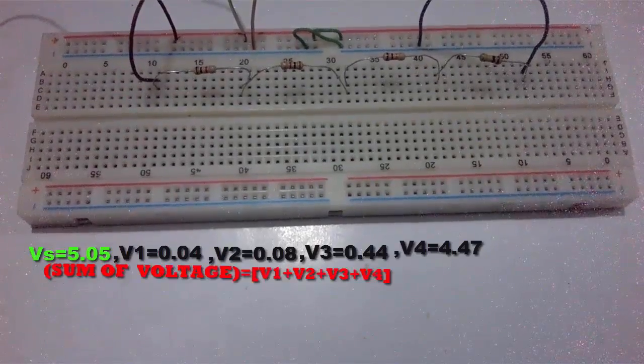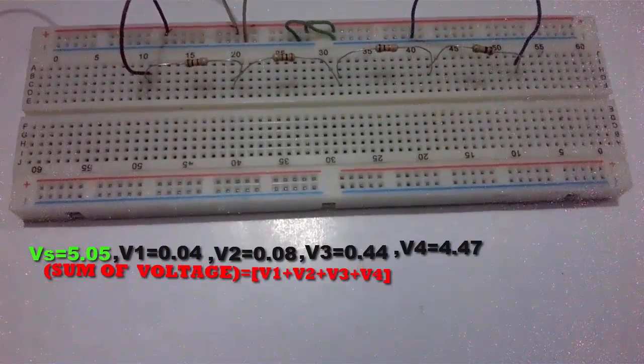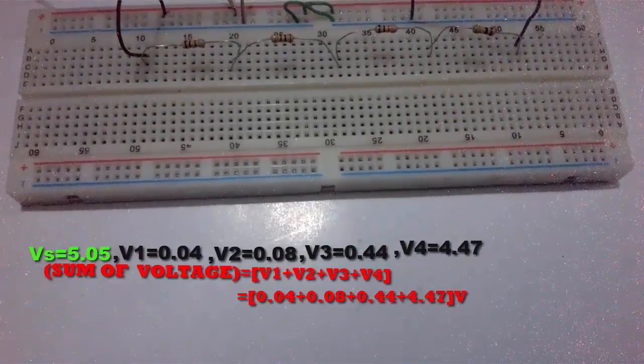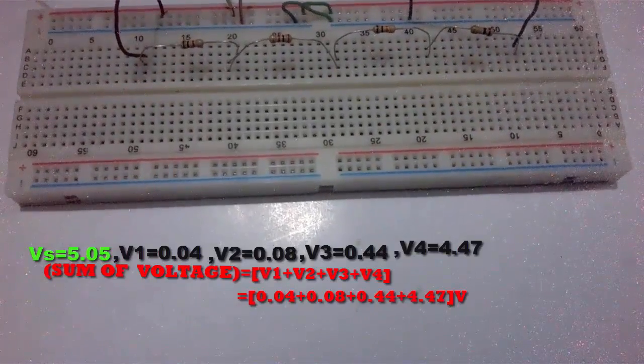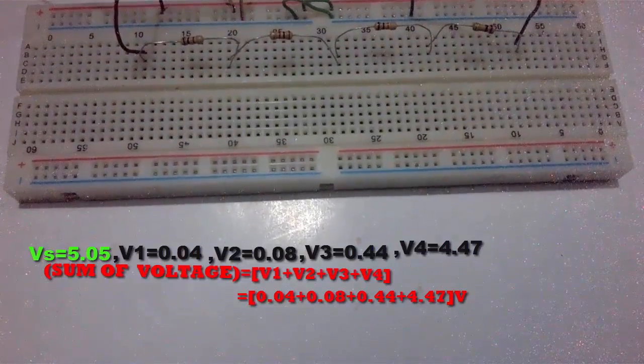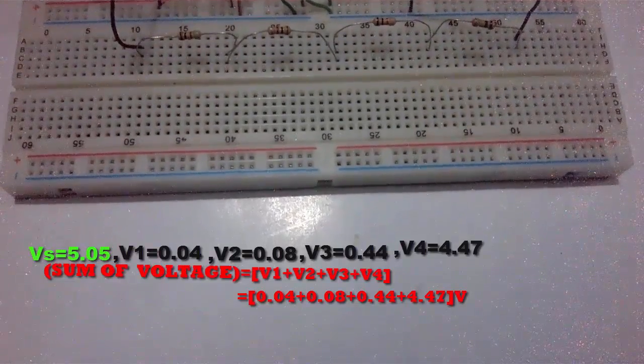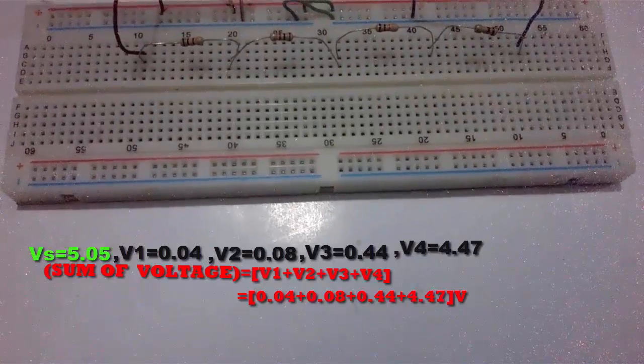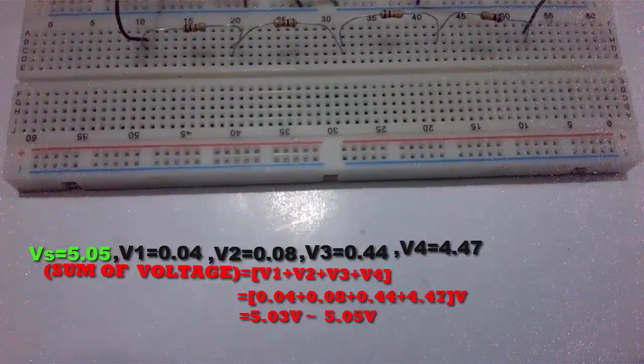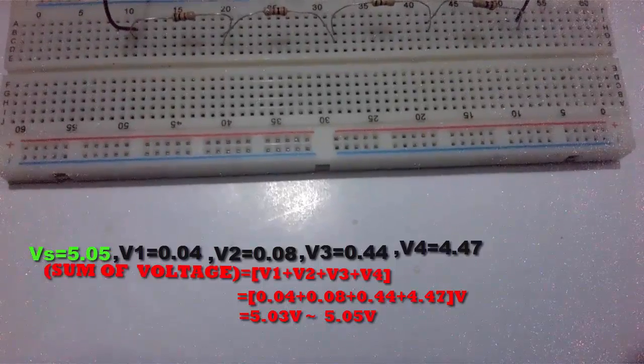So, the sum of voltage equals V1 plus V2 plus V3 plus V4. Add all the voltage across resistors: 0.04V plus 0.08V plus 0.44V plus 4.47V. The total voltage is 5.03V, which is approximately 5.05V.